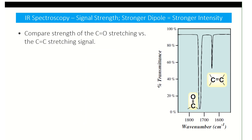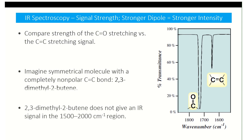One difference in intensity is due to the dipole moment — the stronger and larger the dipole, the stronger the intensity. So if you compare the carbonyl to the alkene, you can see exactly why.